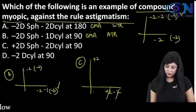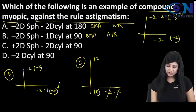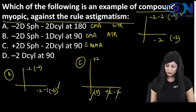So this becomes now plus 2 and 0. So this becomes simple hypermetropic astigmatism and because 0 is more so again this is against the rule astigmatism.